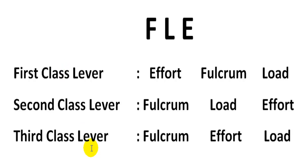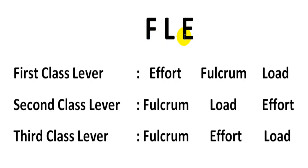For the three lever classes, here is a trick to avoid confusion: use the letter combination F-L-E, which stands for 'flea.' In first class lever, F means Fulcrum — the fulcrum is in the middle between effort and load. In second class lever, L means Load — the load is in the middle between fulcrum and effort. In third class lever, E means Effort — the effort is in the middle between fulcrum and load.